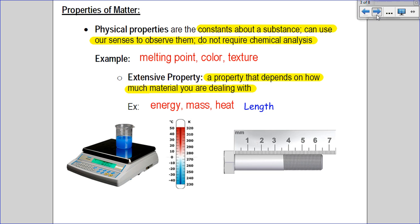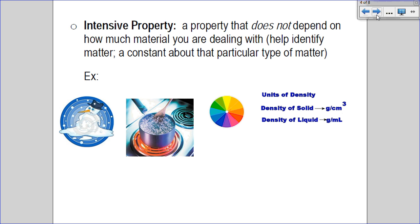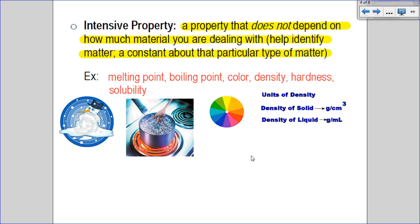Now the intensive properties are things that are much more important in chemistry. It's a property that does not depend on how much stuff you've got, and it also can help you identify things. It's constant for that particular type of matter. You might be scratching your head going, 'Well, what? I don't quite get it.' Well, things we're talking about are like melting point, boiling point, color, density, hardness, and solubility.